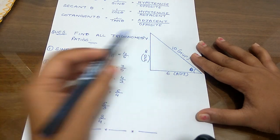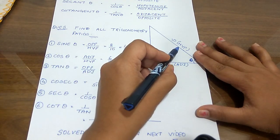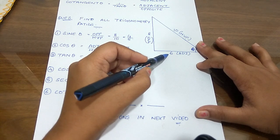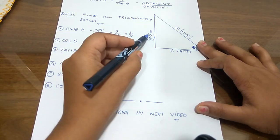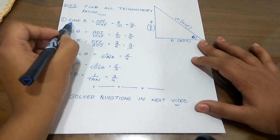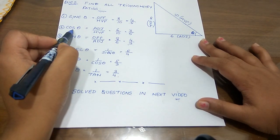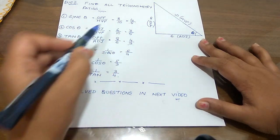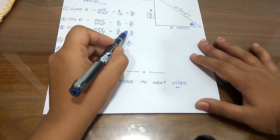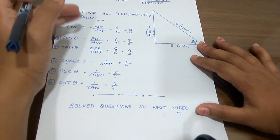Sine theta is opposite upon hypotenuse, which is 8 upon 10, simplified to 4 upon 5. Cos theta is adjacent upon hypotenuse — 6 upon 10 — which gives 3 upon 5. Tan theta is opposite upon adjacent — 8 upon 6 — which gives 4 upon 3. Cosec theta is the reciprocal of sin theta: sin theta was 4 upon 5, so cosec theta is 5 upon 4. Sec theta is the reciprocal of cos theta: cos theta was 3 upon 5, so sec theta is 5 upon 3. Cot theta is the reciprocal of tan theta: tan theta was 4 upon 3, so cot theta is 3 upon 4. That is how you calculate all the trigonometric ratios.